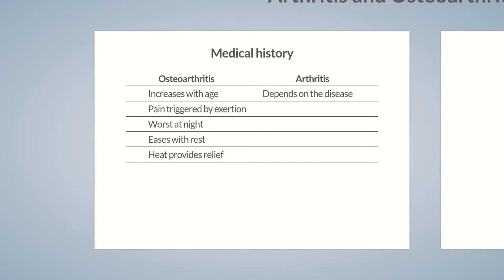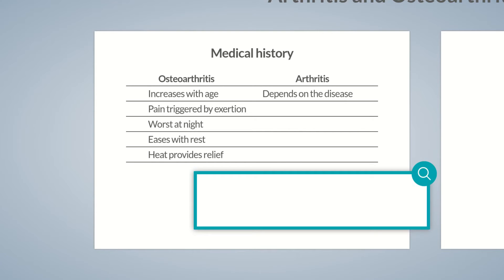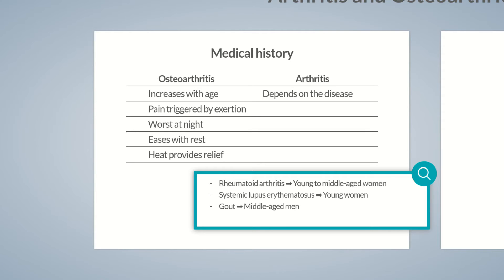In addition, sex can determine the probability of developing a rheumatic disease. Rheumatoid arthritis is most commonly diagnosed in young to middle-aged women, whereas systemic lupus erythematosus often affects young women. Gout is common in middle-aged men and women of postmenopausal age. In contrast, spondyloarthropathies usually affect young men. So, although the arthritides can occur in all age groups — which is in contrast to osteoarthritis — the development of arthritis focuses on particular life stages or sex, depending on the cause.